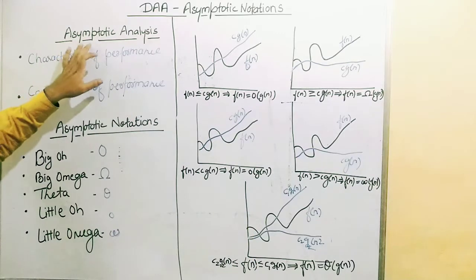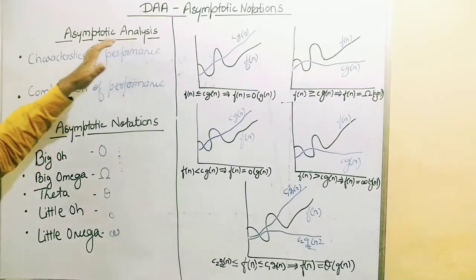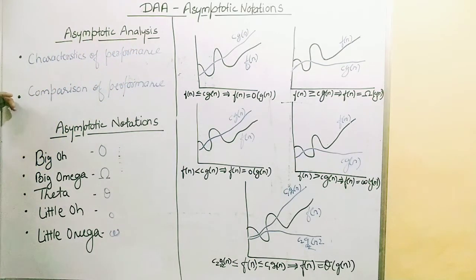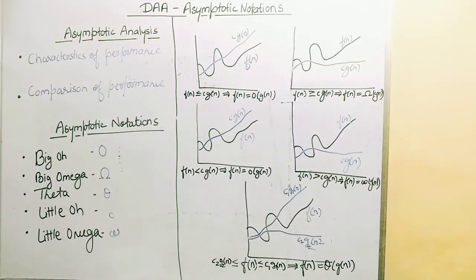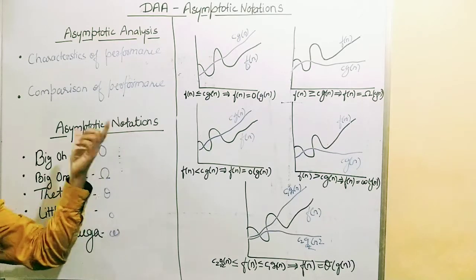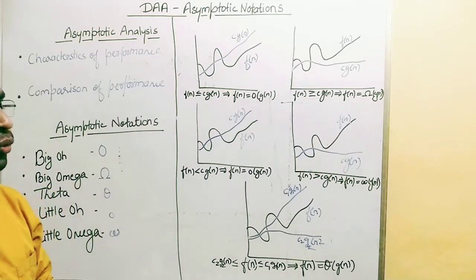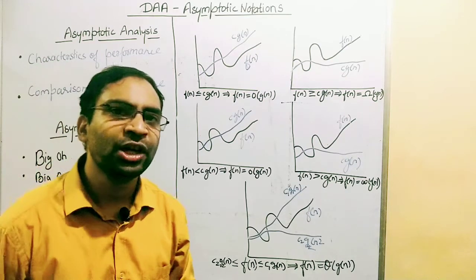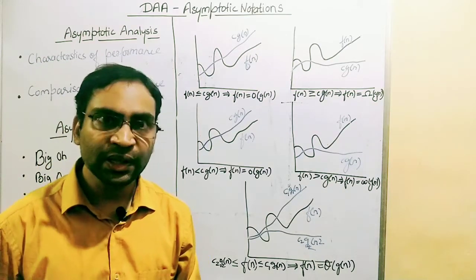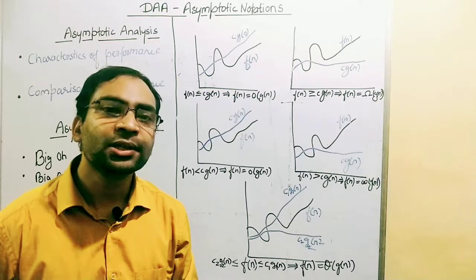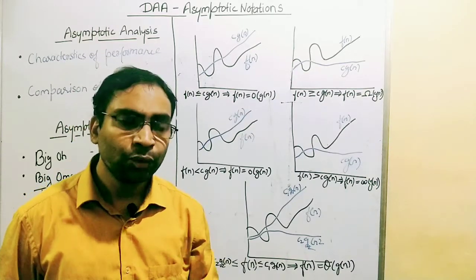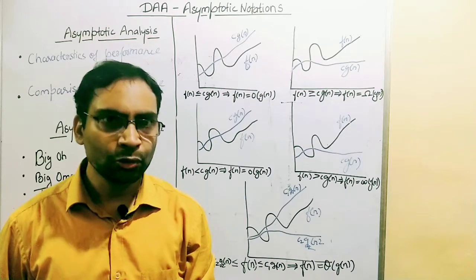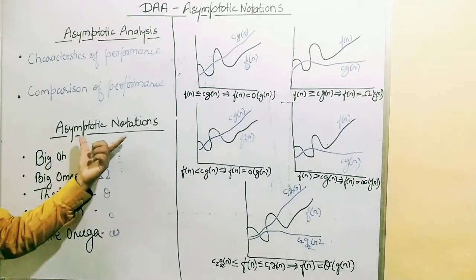That is how asymptotic analysis evolved — we need to assume how the exact performance of the algorithm will be. Obviously, we cannot analyze the perfect or exact performance of the algorithm, but we want to have some assumptions about how the algorithm will perform. That is why we need asymptotic analysis. We need some mathematical expressions — even to assess the approximate performance of the algorithm — and these are called asymptotic notations.